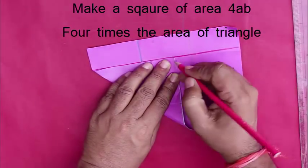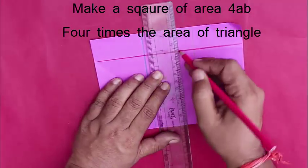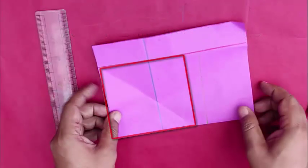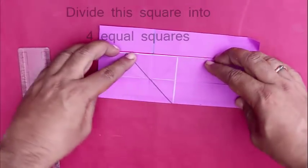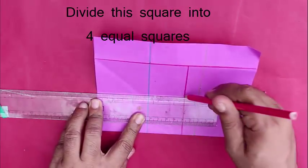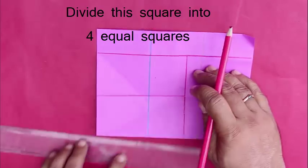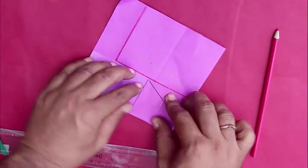And so we will now start folding this square whose area is four times a times b. Remember, the area of our triangle was a times b, so we have to now divide this square in four equal parts so that each square will have the area a times b. We divide this by folding the square along the length and the breadth.